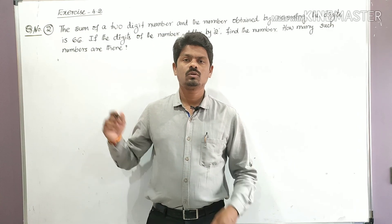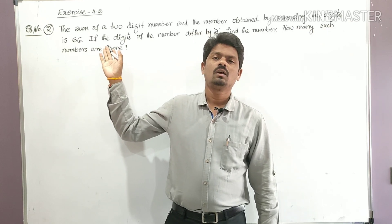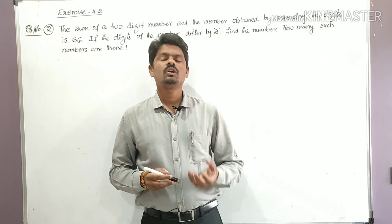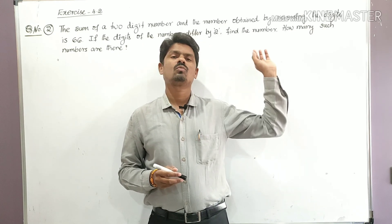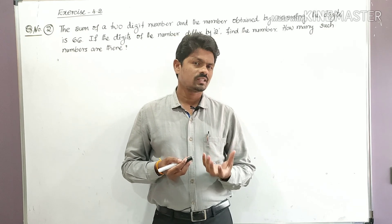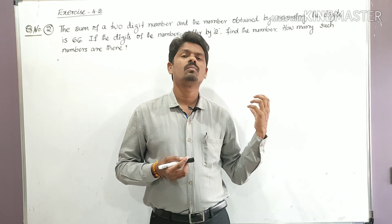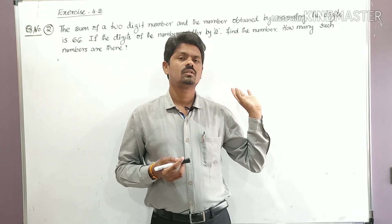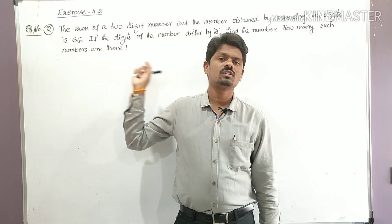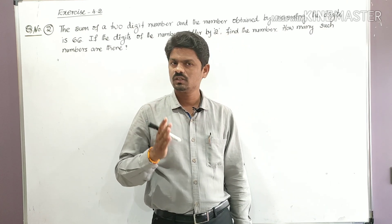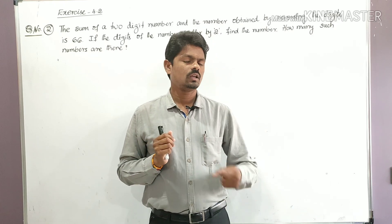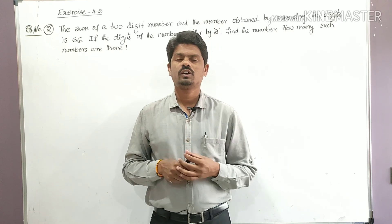Hello students, welcome to Learn More Math. Today we are going to find the solution for a problem from Chapter 4, 'Pair of Linear Equations in Two Variables', Exercise 4.2, Question Number 2. There will be two unknown quantities in the given situation. First, we have to identify them, let them be x and y, form linear equations, and then solve them.